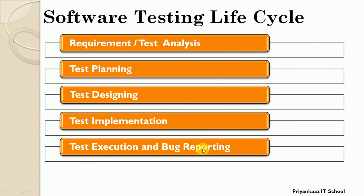Whenever a defect is found, the tester logs it in the defect report and reports it to the development team. After bug reporting, the entire bug/defect lifecycle is carried out — where there are a variety of phases through which every defect needs to be tracked. Once all defects are fixed by the development team and the defect lifecycle is complete, we can proceed to the last phase.